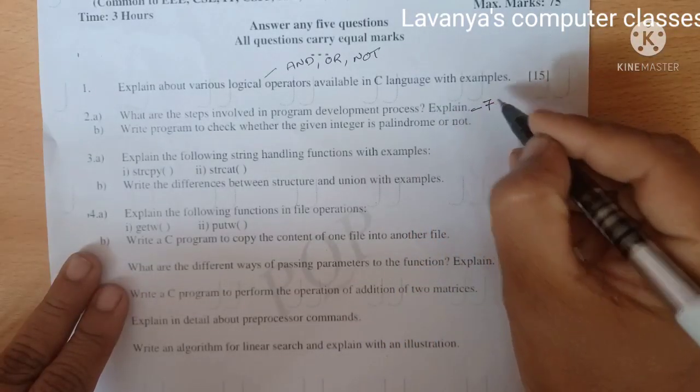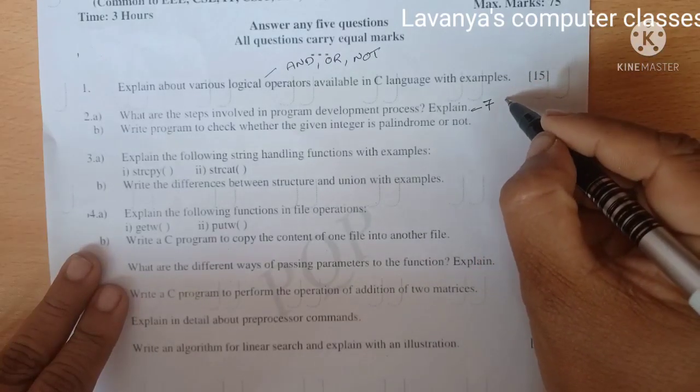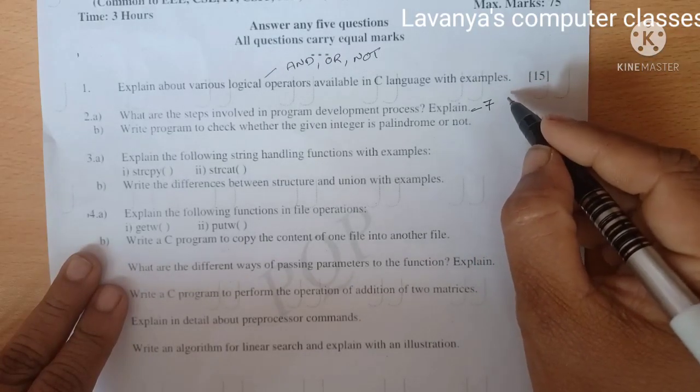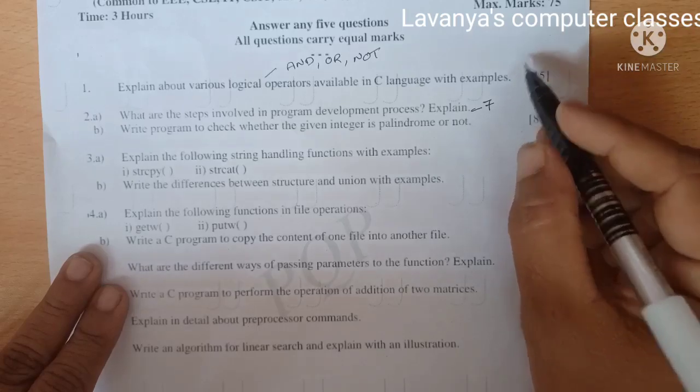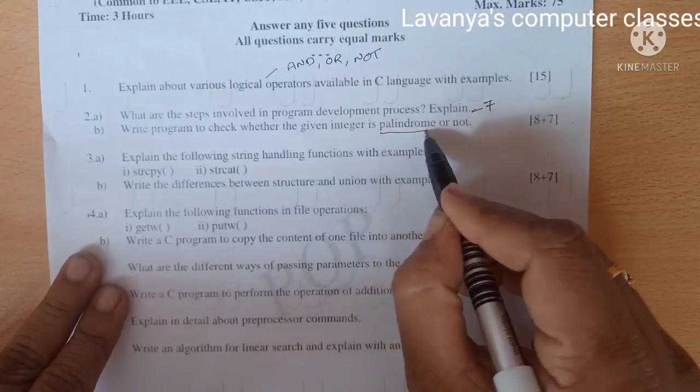The second question 2A is what are the steps involved in program development process and explain. There are 7 steps: requirement analysis, coding, testing, analysis, maintenance, everything.